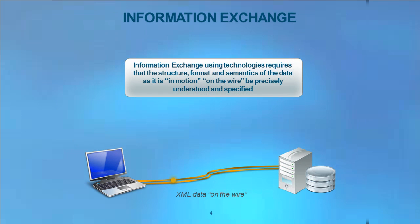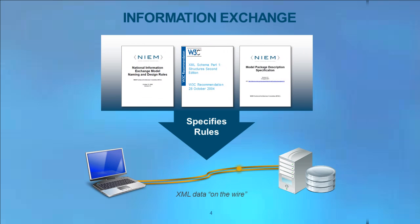Information exchange using technology requires that the structure, format, and semantics of the data, as it is in motion or on the wire, be well understood and precisely specified. The NIEM XML technical specifications define rules for creating information exchange packages that define the in-motion data on the wire using XML technologies.